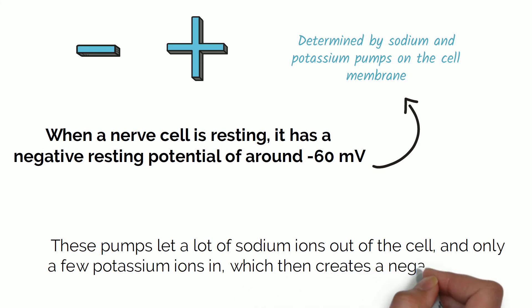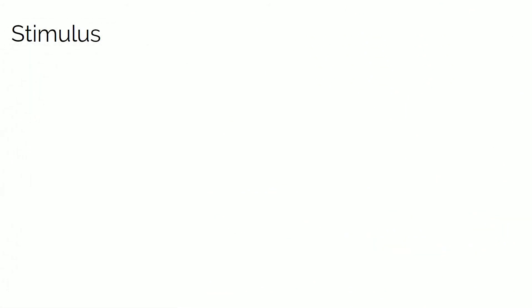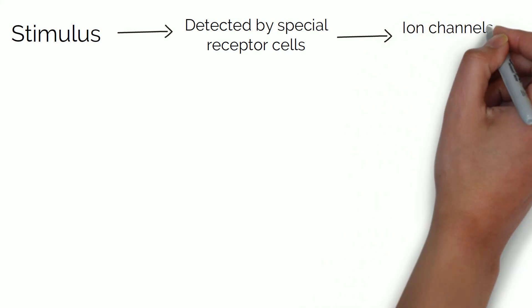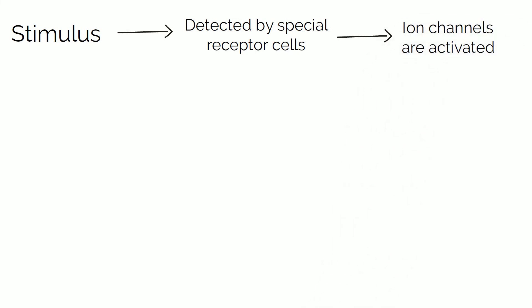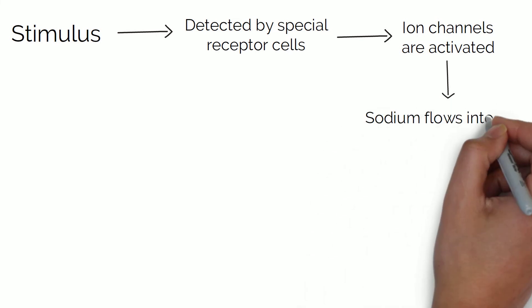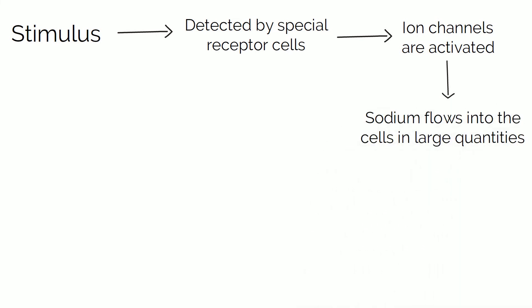When you receive a stimulus like a good smell or a nice taste, for example, this stimulus is received by special receptor cells on your skin, nose, tongue, or wherever the stimulus occurred. This stimulus then activates ion channels on the nerve cell membranes, allowing sodium to flow into the cells in large quantities. So when these cells are resting, sodium is being pumped out of them quite fast, but when there is a stimulus, sodium floods these cells, generating an action potential.